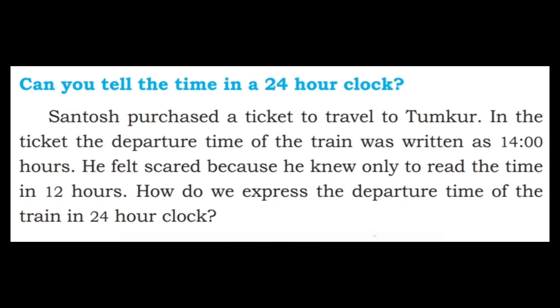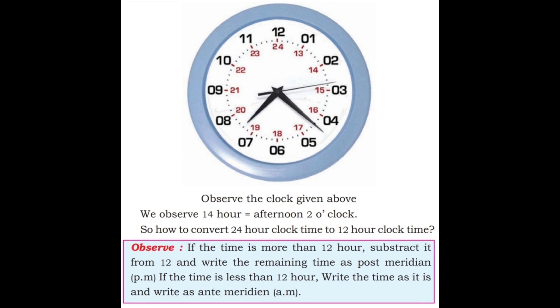Can you tell the time in 24-hour clock? Santosh purchased a ticket to travel to Tumkur. In the ticket, the departure time of the train was written as 14 hours. He felt scared because he knew only to read the time in 12 hours. We observe that 14 hours is equal to afternoon 2 o'clock. To convert 24-hour clock time to 12-hour clock time: if the time is more than 12, subtract 12 and write the remaining time as post meridian (PM).